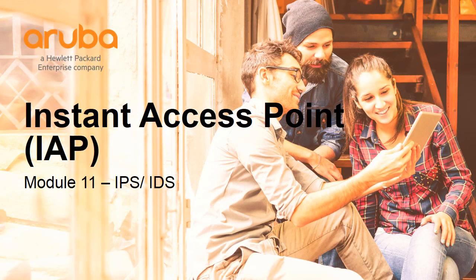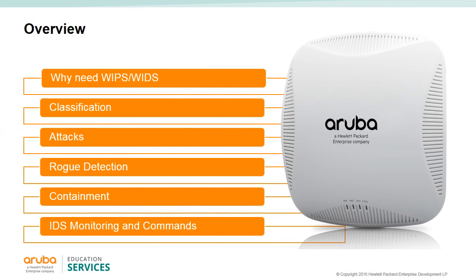Module 11: Instant AP Intrusion Protection System and Intrusion Detection System. This module covers why we need intrusion protection and intrusion detection, the various classifications for Wi-Fi devices, some different attacks that can happen, how rogue detection works, containment options, and some IDS monitoring and commands.